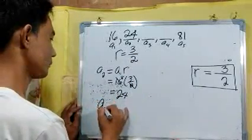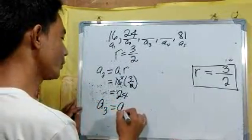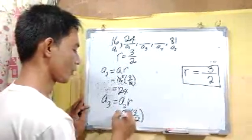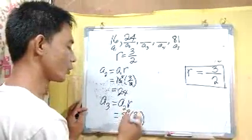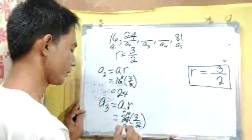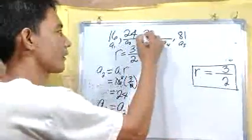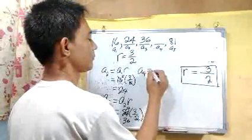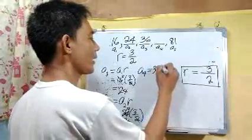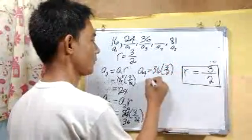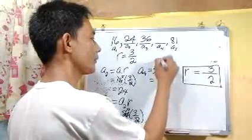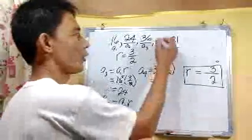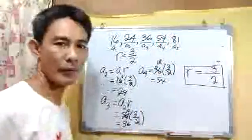Then a sub 3 equals a sub 2 times r: 24 times 3 over 2. 24 divided by 2 is 12, and 12 times 3 is 36. So a sub 3 is 36. Then a sub 4 equals 36 times 3 over 2: 36 divided by 2 is 18, and 18 times 3 is 54. So a sub 4 is 54.